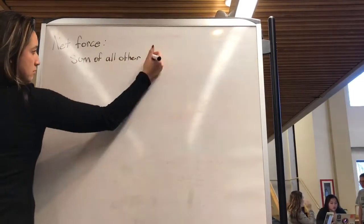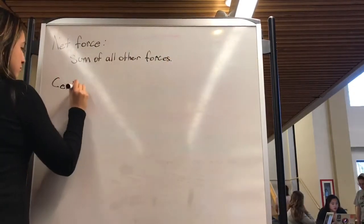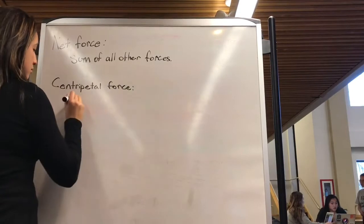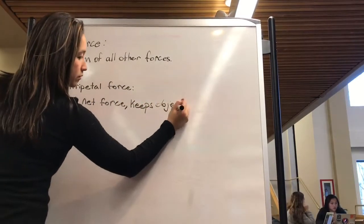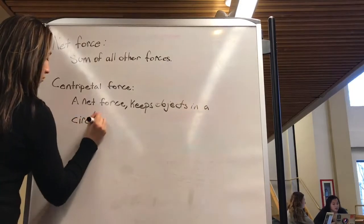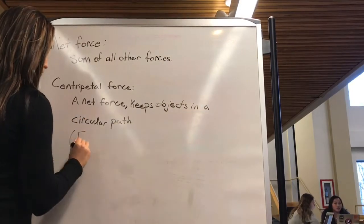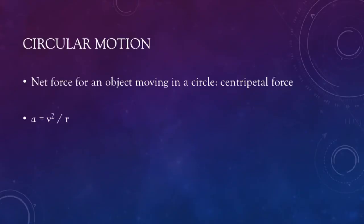When an object moves in a circular motion, we think of the net force as a centripetal force. The centripetal force always points toward the center of the circle and keeps the object moving in a circular path. The acceleration of an object moving in a circle will be equal to v squared divided by r.